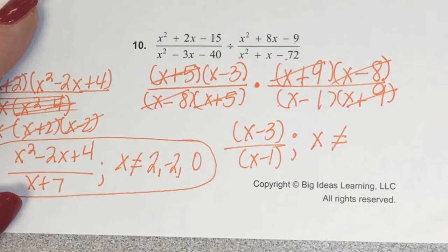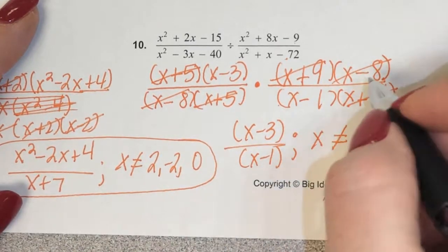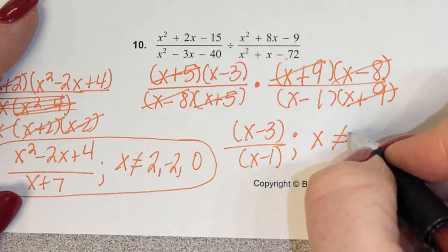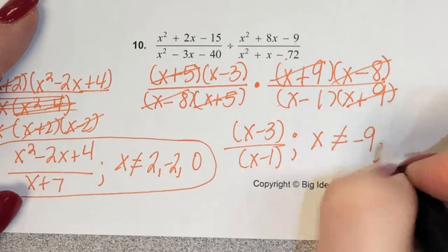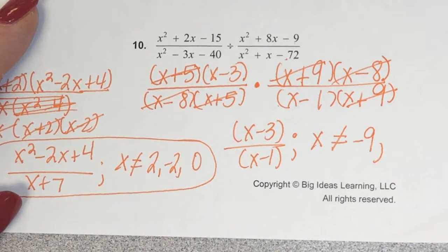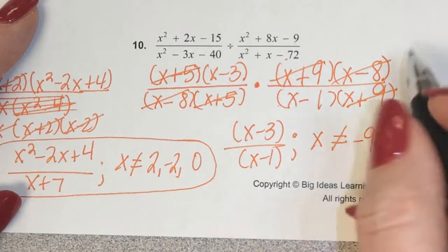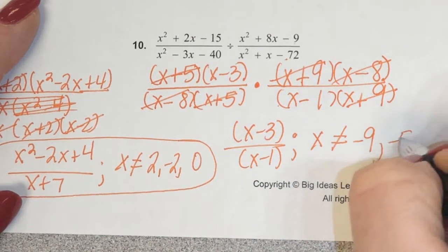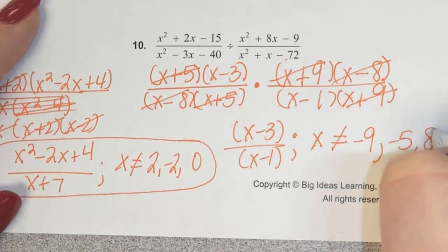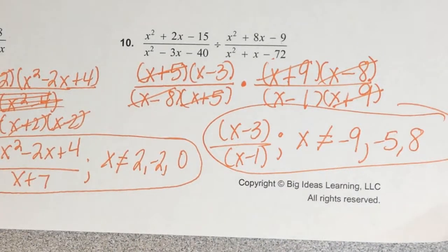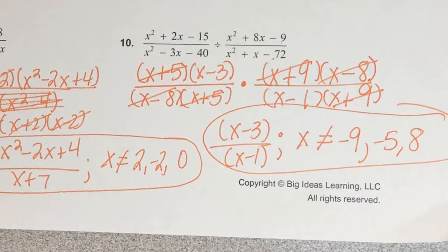What is x not allowed to equal? McKenna, give me the restrictions. Negative 1 and negative 5. So those are our restrictions. Questions? It's not too bad. We always factor first and then go ahead and simplify.